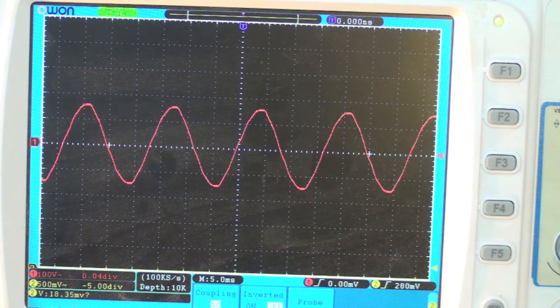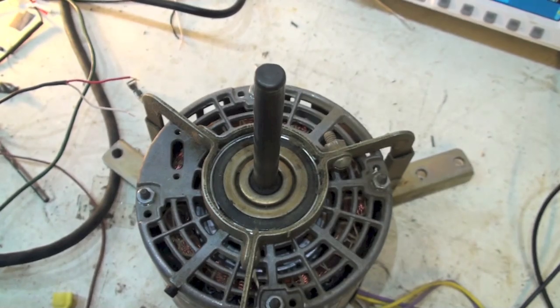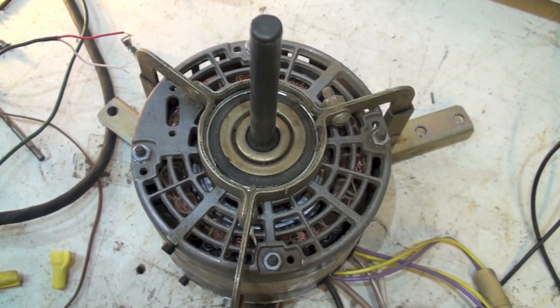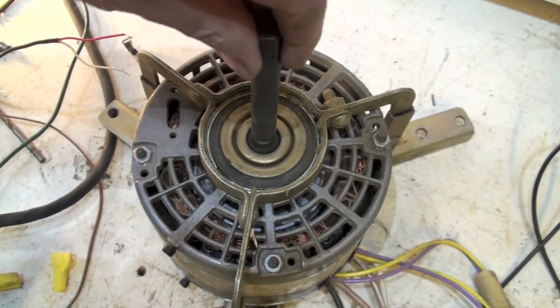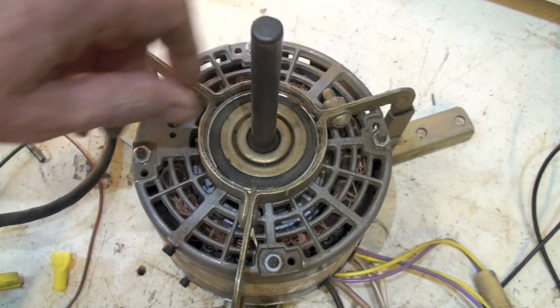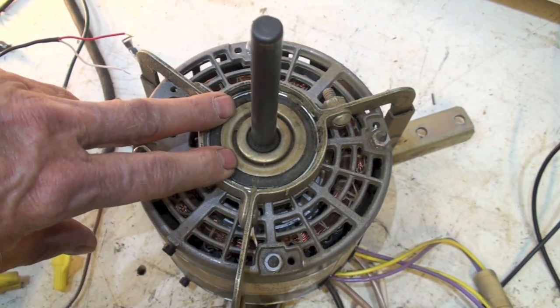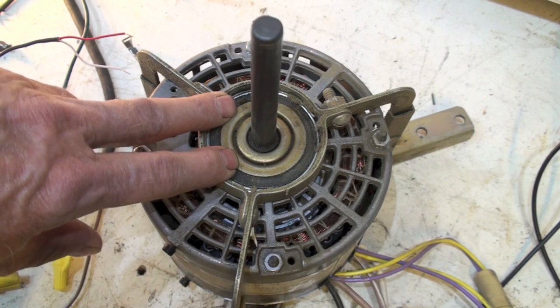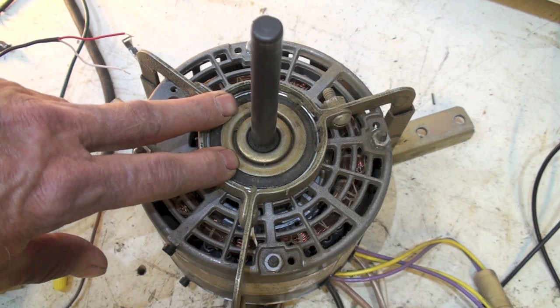This is 120 volts. When we put a motor in here, we start getting some odd things. Most of you have heard of back EMF. If you look at this motor, there are windings and a rotor in the motor. It's an induction motor, so the windings induce power into the rotor, and that begins the operation of the motor.